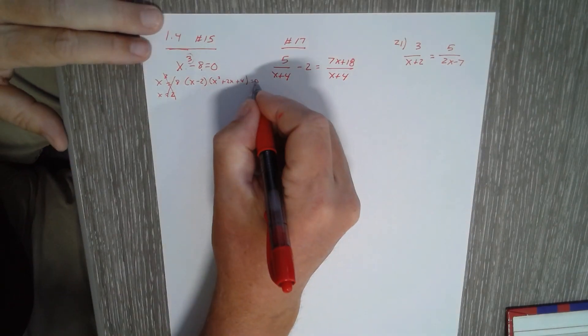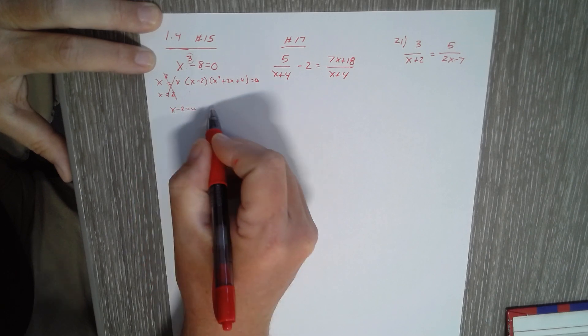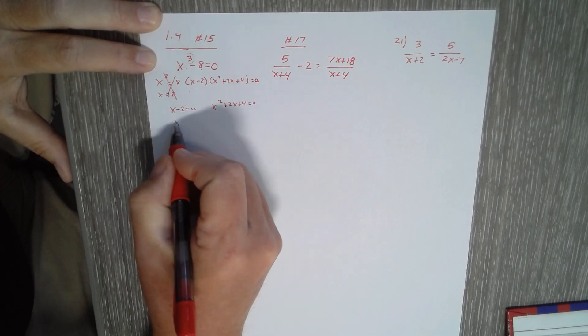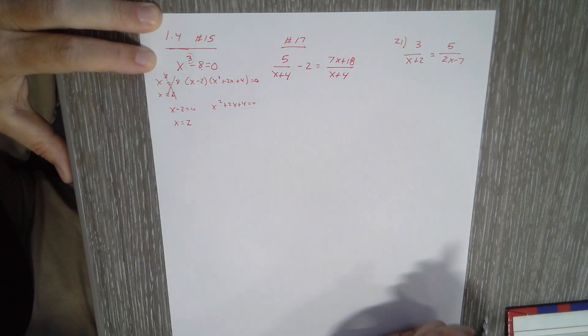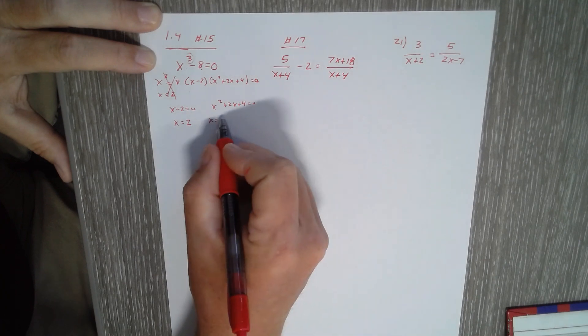Now I can set each of those equal to zero and I get x equals 2 on that one. And this, I have to put in the quadratic formula: opposite of b